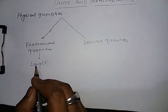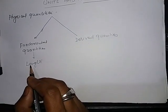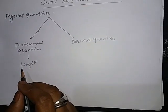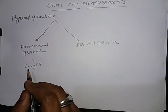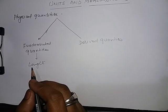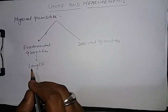There are seven fundamental quantities or base quantities, and their names are mass, length, time, electric current, temperature, luminous intensity, and amount of substance.